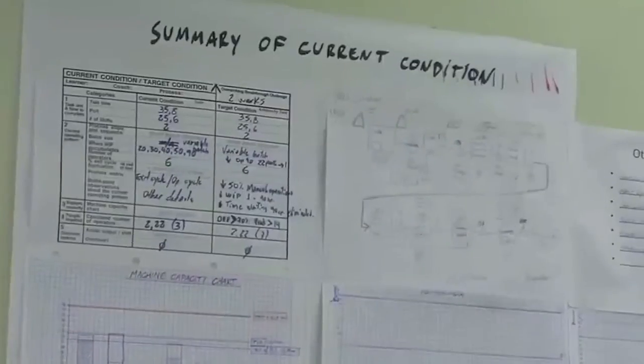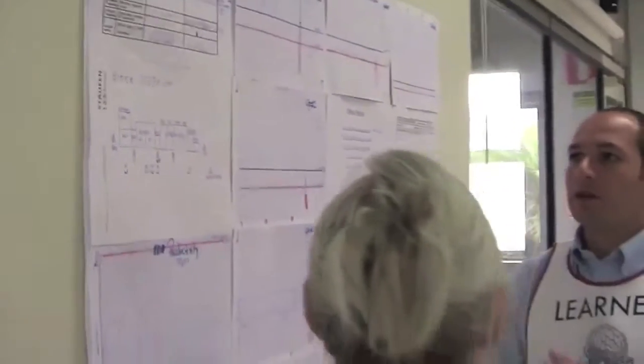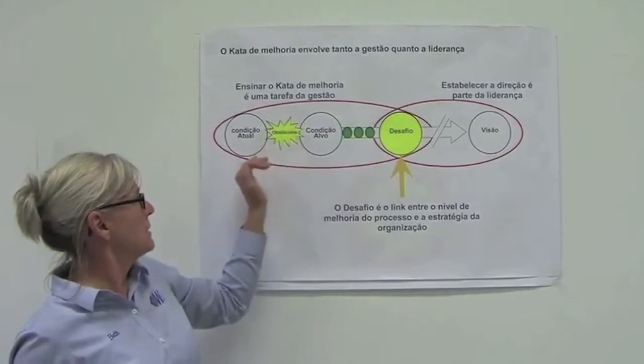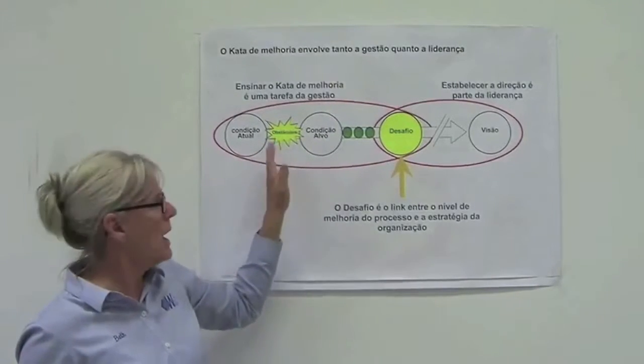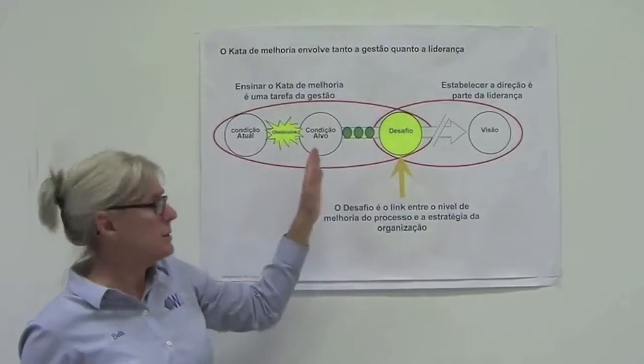Then the learner grasps the current condition as it relates to that vision and challenge, setting this first iterative target condition, identifying obstacles, and experimenting their way to overcome each one preventing them from achieving the target condition.